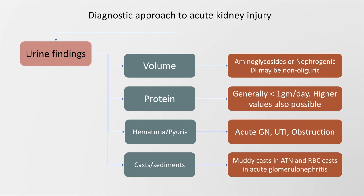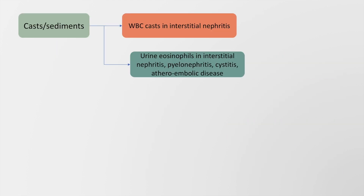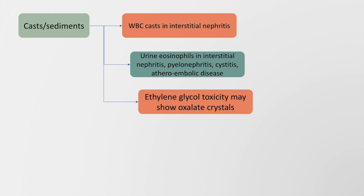Casts and sediments may be used for the diagnosis of AKI. Muddy casts suggest acute tubular necrosis, and RBC casts suggest acute glomerulonephritis. WBC casts are seen in interstitial nephritis. Urine eosinophils are seen in interstitial nephritis but also in pyelonephritis and cystitis.